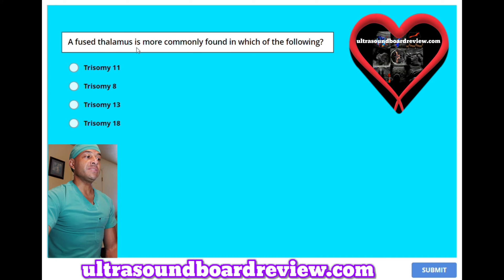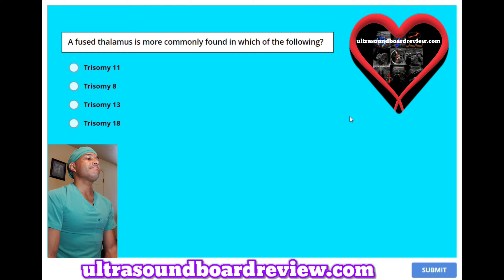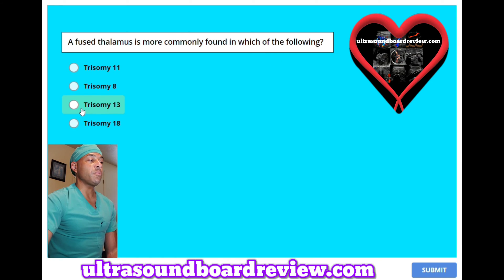A fused thalamus is most commonly found in which of the following? A. Trisomy 11. B. Trisomy 8. C. Trisomy 13. Or D. Trisomy 18. The answer is C. Trisomy 13, which is also called Patau syndrome.